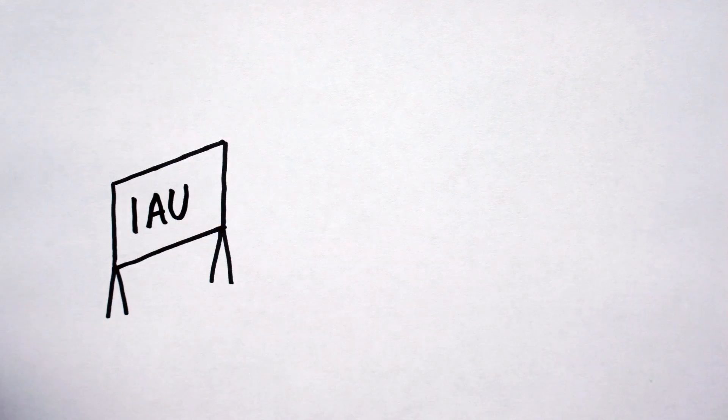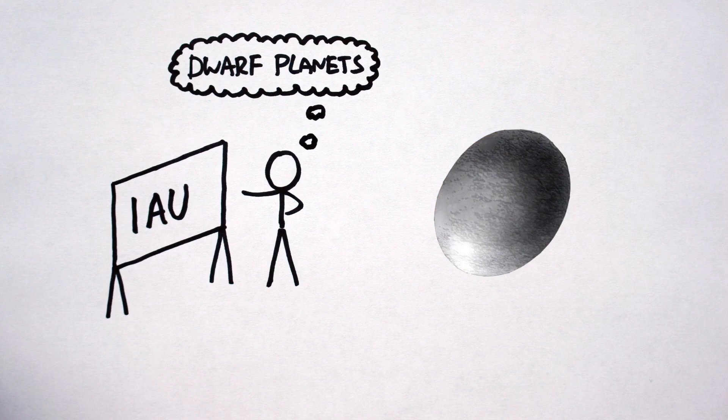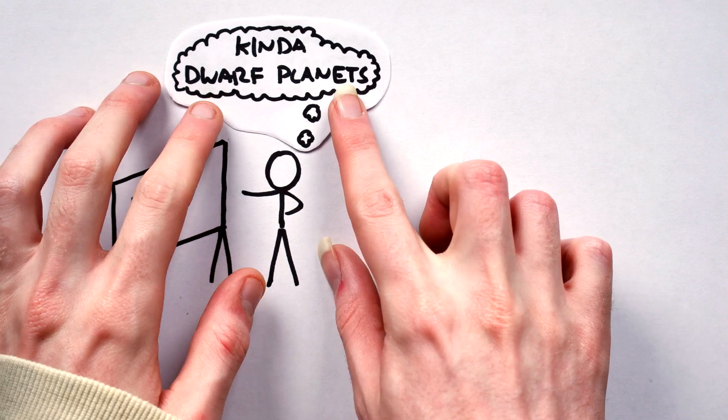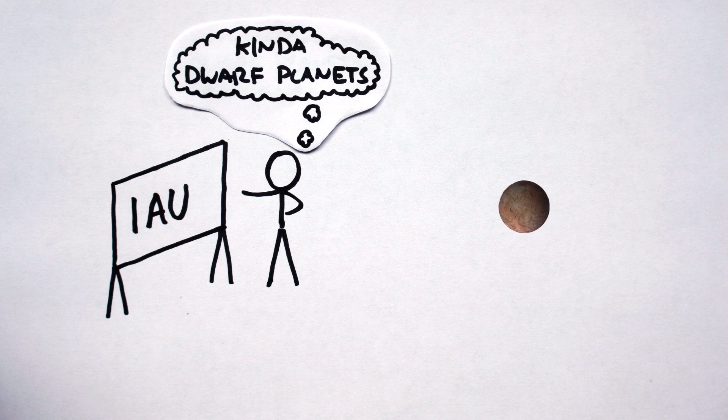According to the IAU, our solar system officially contains five dwarf planets: Ceres, Pluto, Haumea, Makemake, and Eris. However, Orcus, Ixion, Varuna, Quaoar, 2007 OR10, 2007 UK126, and Sedna are amongst the literally dozens of objects that could also be classed as dwarf planets.